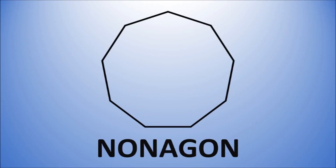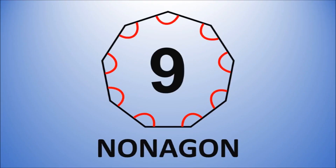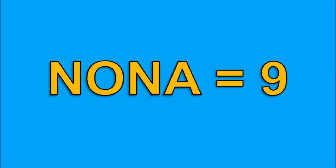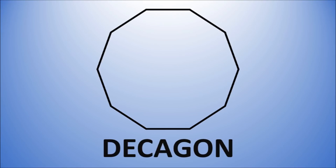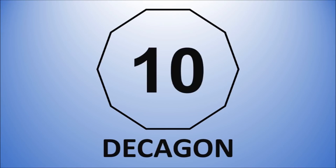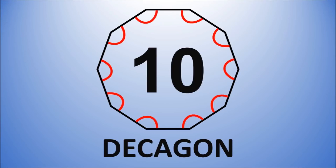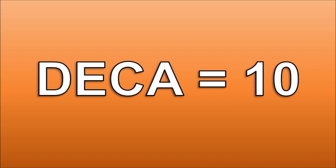A nonagon has nine sides and nine angles made from straight lines. Just remember that nona means nine. A nonagon has nine sides. A decagon has ten sides and ten angles made from straight lines.